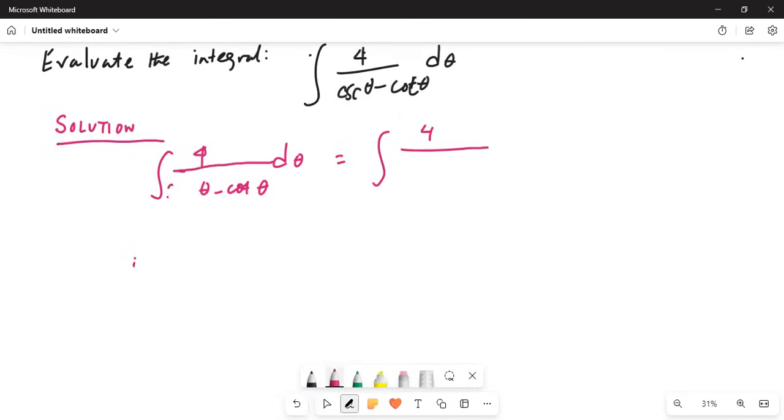4 divided by cosecant theta, which can be written as 1 over sine theta, minus cotangent theta, which is cosine theta over sine theta, all times d theta. So this will be equal to...